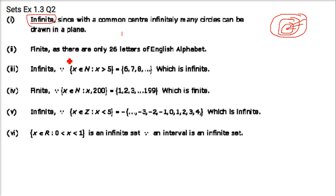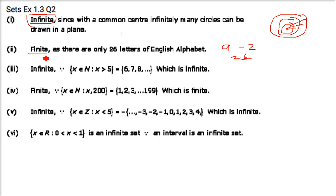Next: the set of letters of the English alphabet. It starts from A and goes up to Z — that is 26 letters. So the set of letters of the English alphabet is finite.